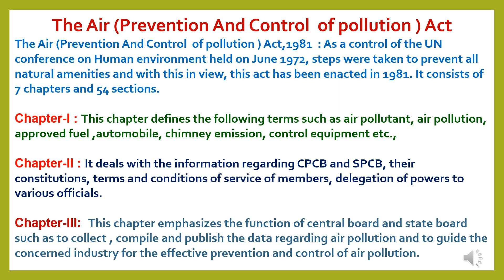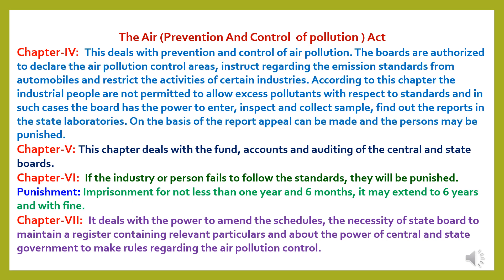Chapter 2 deals with information regarding CPCB and SPCB, their constitutions, terms and conditions of service of members, and delegation of powers to various officials. Chapter 3 emphasizes the functions of the central board and state board, such as to collect, compile and publish data regarding air pollution and to guide concerned industries for effective prevention and control of air pollution. Chapter 4 deals with prevention and control of air pollution. The boards are authorized to declare air pollution control areas, instruct regarding emission standards from automobiles and restrict the activities of certain industries. Industrial people are not permitted to allow excess pollutants beyond standards; the board has the power to enter, inspect, collect samples, and obtain reports from state laboratories. On the basis of the report, appeal can be made and the person may be punished.